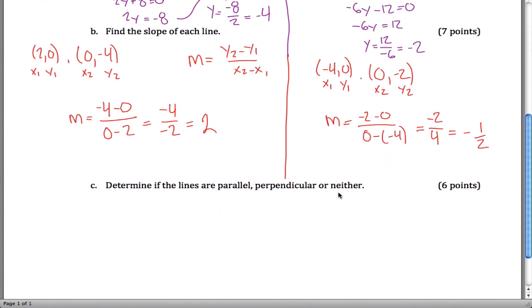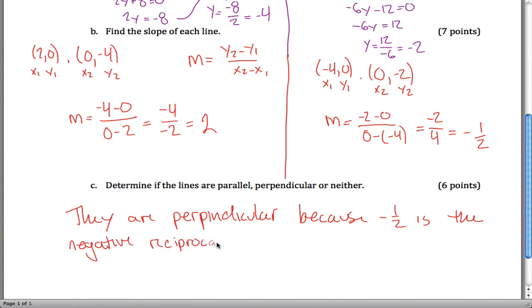And then part C says determine if the lines are parallel, perpendicular, or neither. They are perpendicular because negative one-half is the negative reciprocal of positive 2, which you can think of as 2 over 1. That's the end of this quiz.